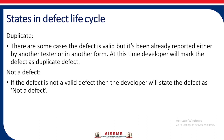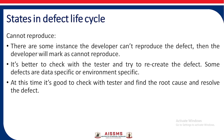Duplicate: there are some cases where the defect is valid but it has already been reported by another tester or in another form — in that case the developer will mark the defect as a duplicate. Not a defect: if the defect is not a valid defect, then the developer will state it as not a defect. Cannot reproduce: there are some instances where the developer cannot reproduce the defect, and will mark it as cannot reproduce. It is better to check with the developer and try to recreate it. Some defects are data-specific or environment-specific, so it is good to check with the tester and find the root cause.